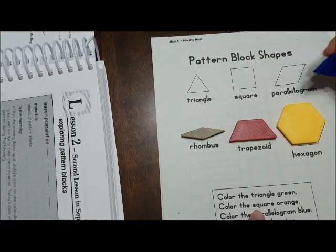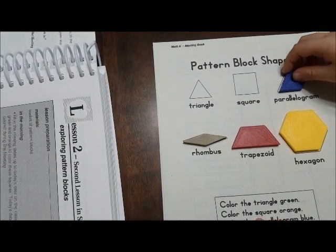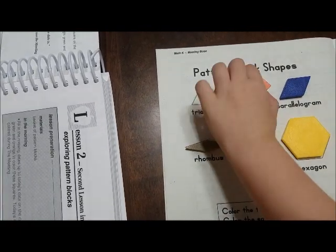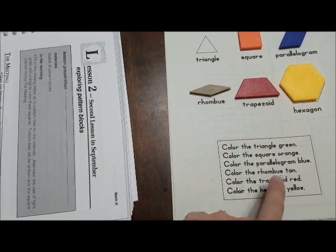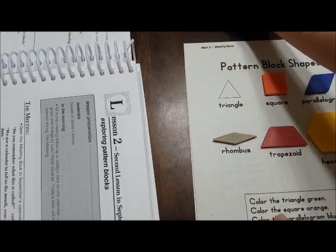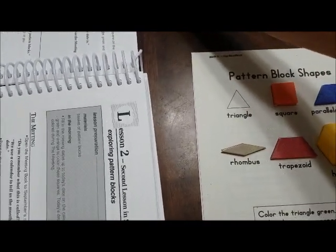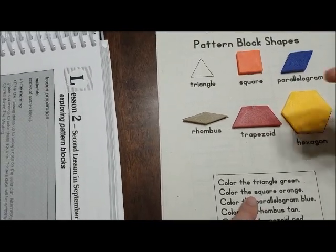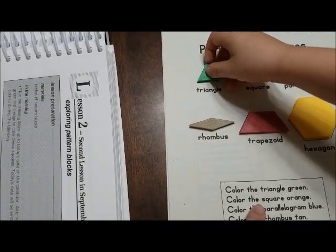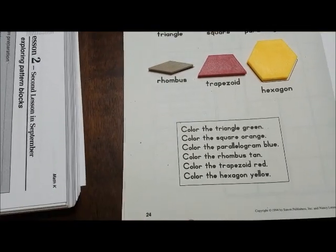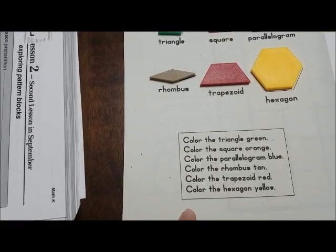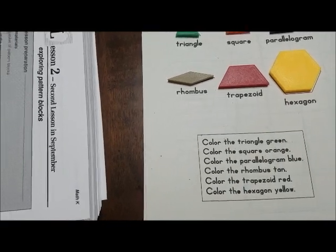Sometimes the color helps. Mm-hmm. Alright, can you find me a square? What color is the square? Orange. Orange. And see, it tells us it's orange. Now, can you find me a triangle? What color is the triangle? Green. Green. So, see, our pattern blocks go exactly with our Saxon here.